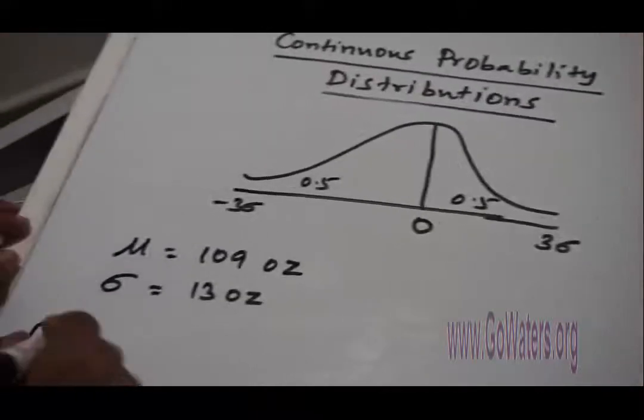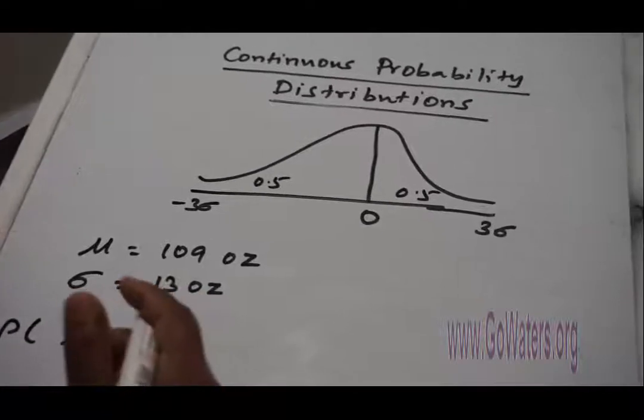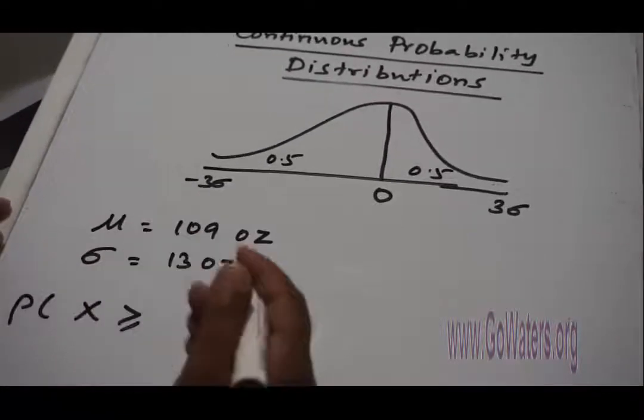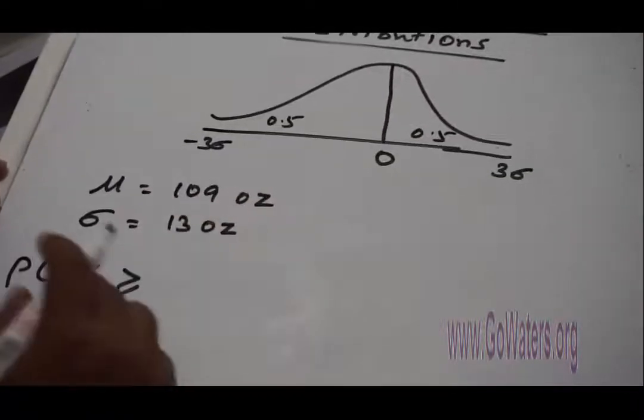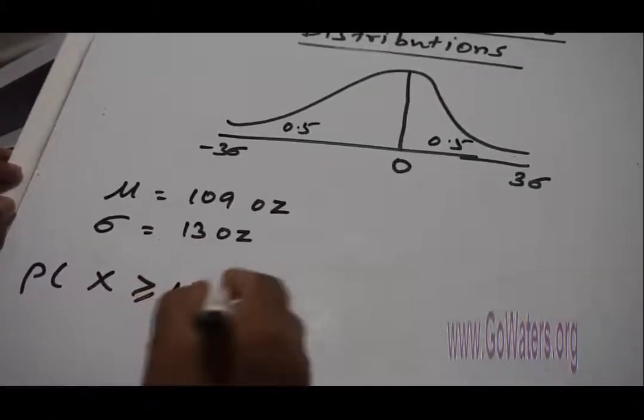We need to calculate the probability of X is greater than or equal to 141, because 141 ounces or heavier means more than this. So X is greater than or equal to 141.